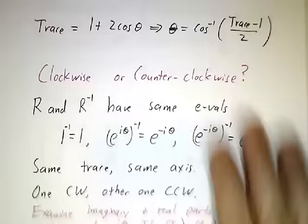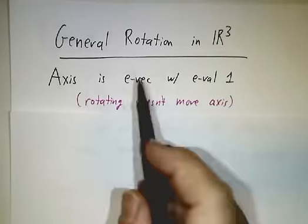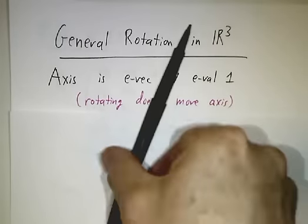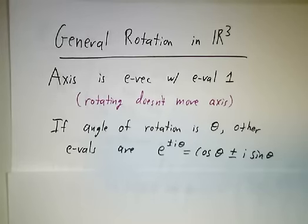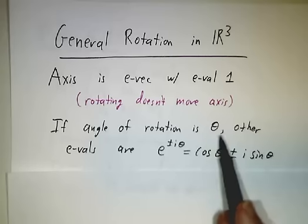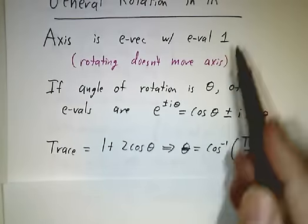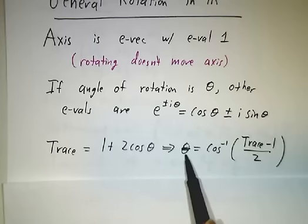Now let's switch gears and go to a general rotation — a rotation about any axis. The first thing to notice is that the axis itself is always an eigenvector with eigenvalue 1, because no matter what direction you're rotating around, the axis itself doesn't move. Also, if the angle of rotation is θ, rotating by θ gives eigenvectors with eigenvalues e^(iθ) and e^(−iθ). So for any rotation by θ about some axis, the eigenvalues are 1 (for the axis), e^(iθ), and e^(−iθ).